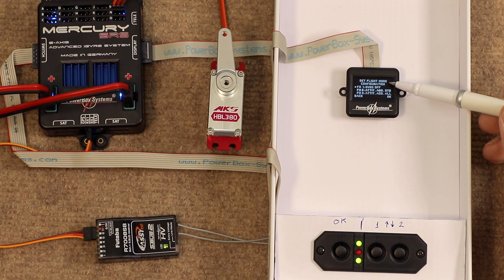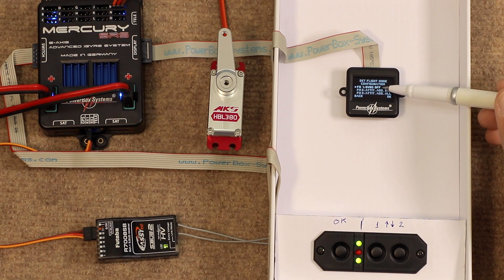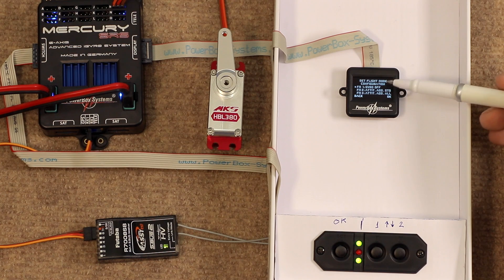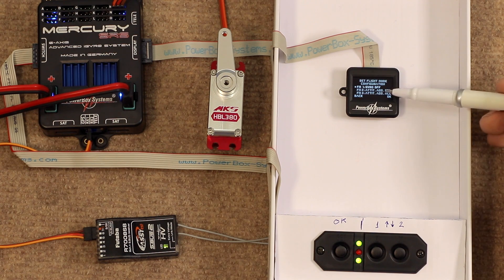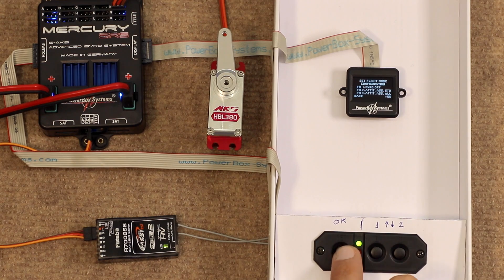Set flight mode configuration. Now I would recommend not touching this unless you really know what you're doing. Flight mode one should always be gyro off, as you always need to be able to turn the gyro off in case something goes wrong. Flight mode two is attitude assist standard, so in other words, only on elevator and aileron. And flight mode three is attitude assist all, which is all three axes. Attitude assist being hitting hold on the gyro. So that looks okay to me, we'll leave that as it is.